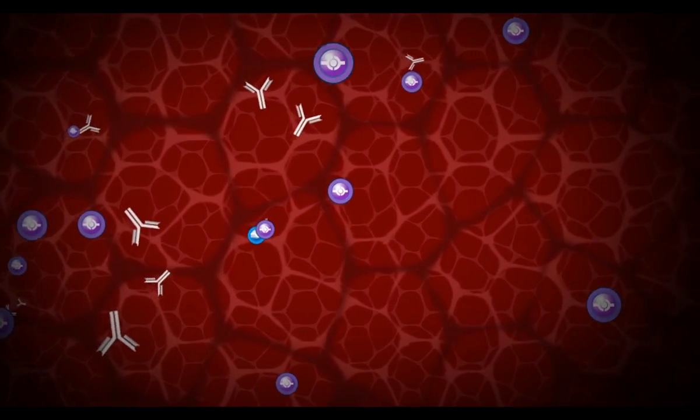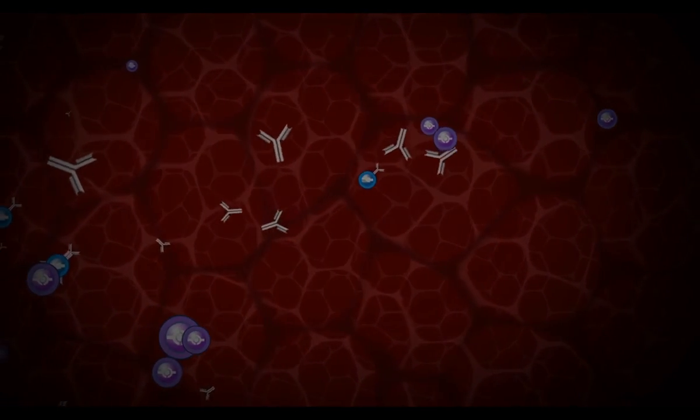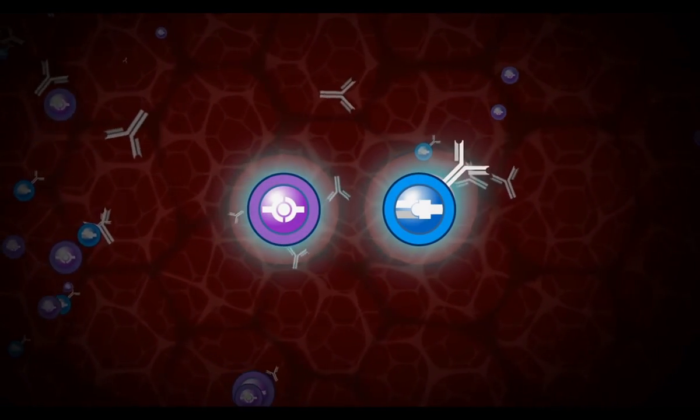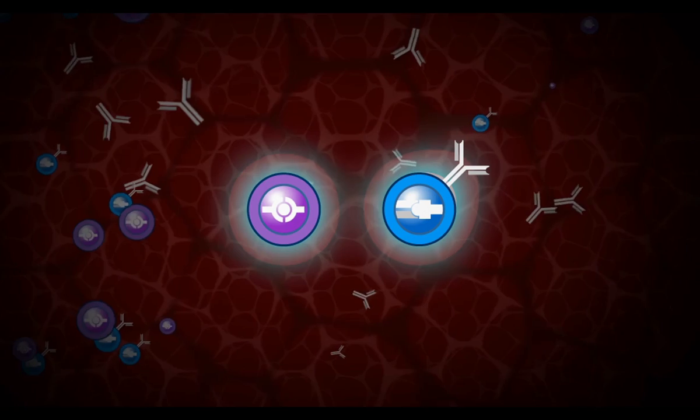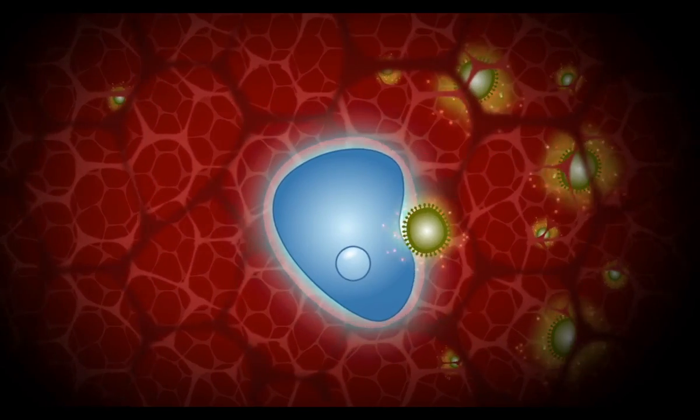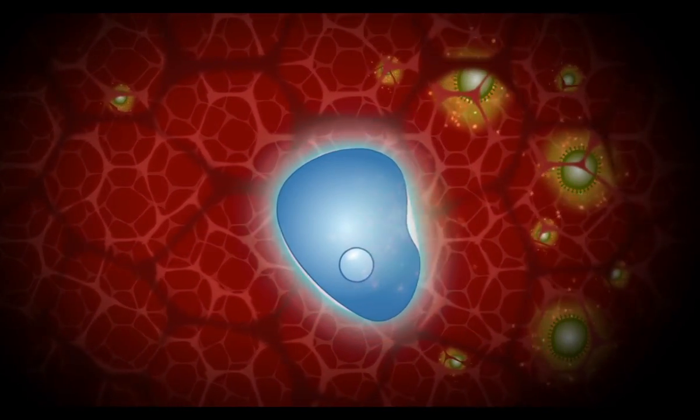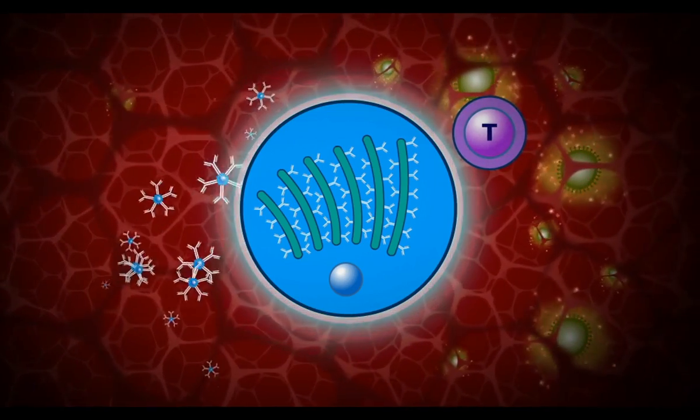In order to understand how vaccines work, we first need to understand how the immune system works and how vaccines stimulate the immune system to provide protection against infectious diseases. This short animation will describe how the immune system fights infection and explain how it responds to a vaccine.